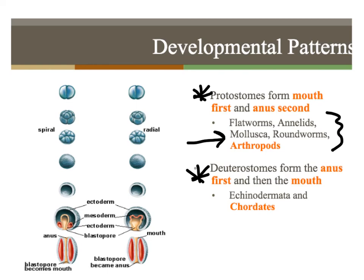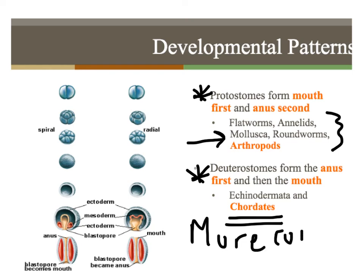Deuterostomes would be your echinoderms and chordates. Humans — we are chordates. We have backbones. So deuterostome development is the more complex type of development. That is protostomes and deuterostomes.